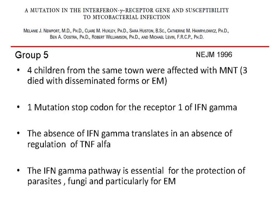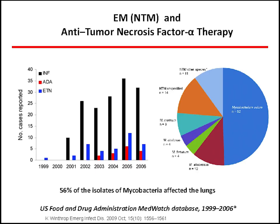The fifth group involves children — specifically those from Malta island who were completely lacking in immunity, with an absence of interferon-gamma receptors and absence of TNF-alpha regulation. These children developed very severe disseminated forms of Mycobacterium avium, and unfortunately three or four children died as described in that paper.